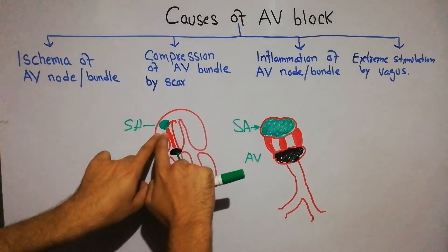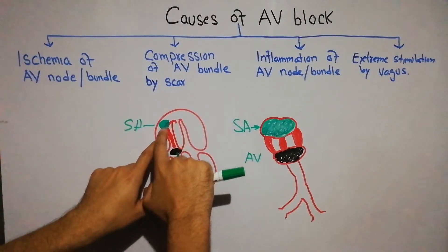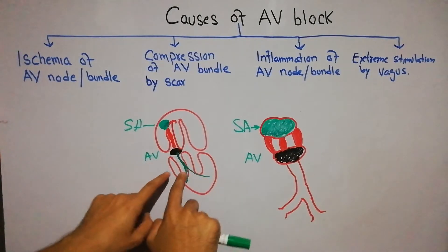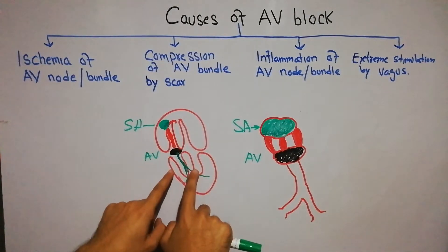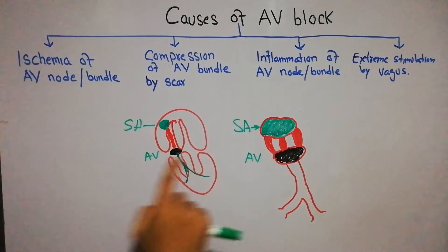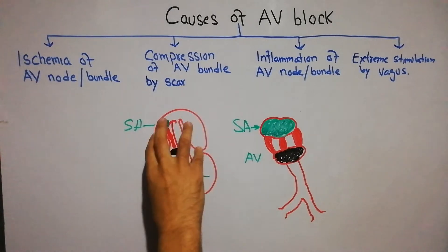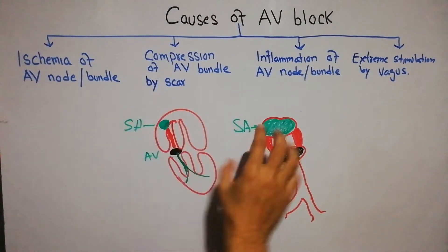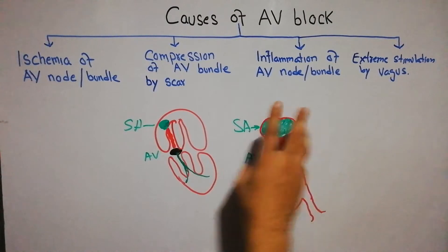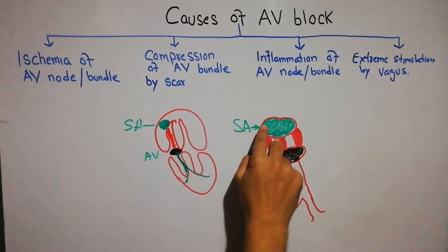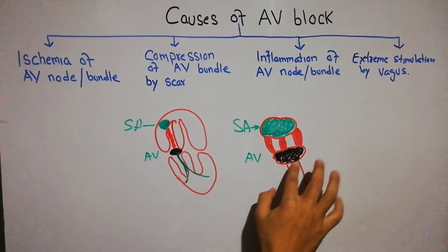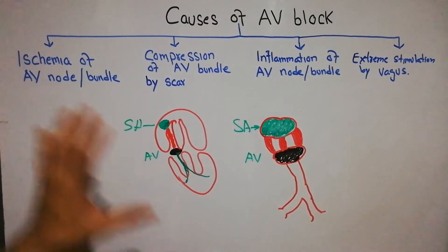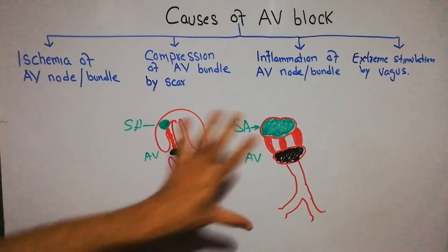Here we have the atria, here is the interatrial septum, here we have the ventricles — the right ventricle and the left ventricle. The electrical impulse conduction fibers have been enlarged in this diagram: the internodal fibers, the AV node, the bundle of His, and the Purkinje fibers are all enlarged here.